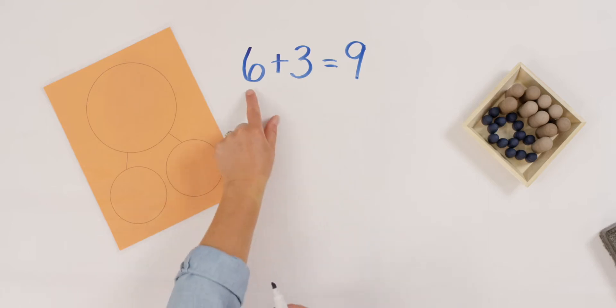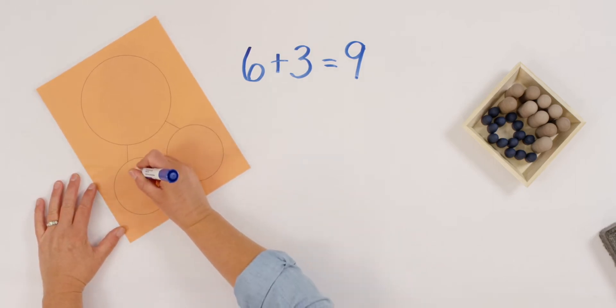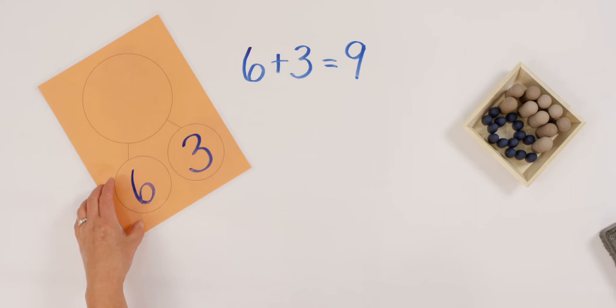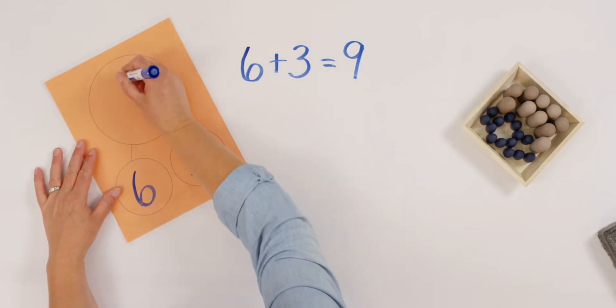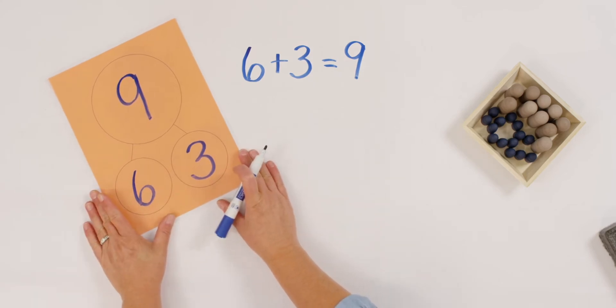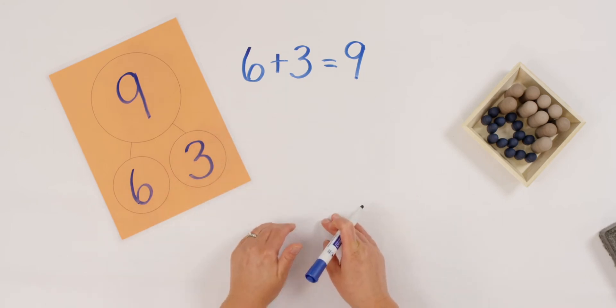Part, part equals the whole. So what I like to do is let's start with the part this time. What are my two parts of my problem that equal the whole? Yes. Six and three are the parts. So let's write them in my number bond template. You can write them with your marker like I am or if you want to get out your counters, you can put six in one circle and three in another circle. And then how much do we have all together? Six and three make, yes, nine. So let's write nine in our whole.